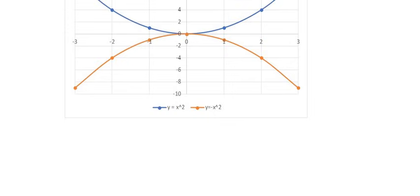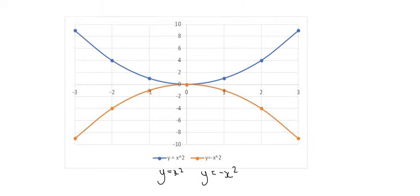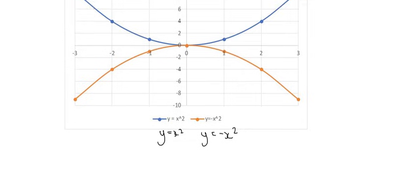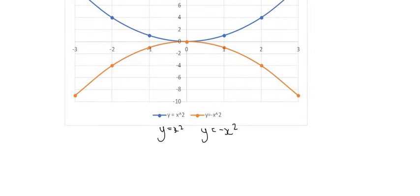And here we have two more parabolas, where the blue one is y equals x squared, and the red one is y equals negative x squared. And so both of them don't have a plus anything at the end, and so they both go through the zero point.